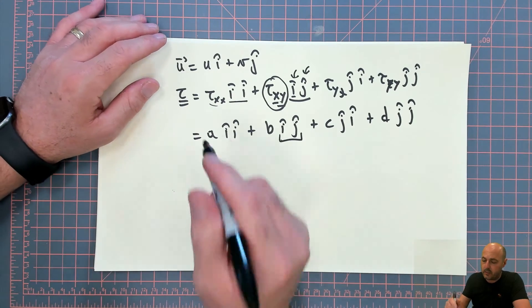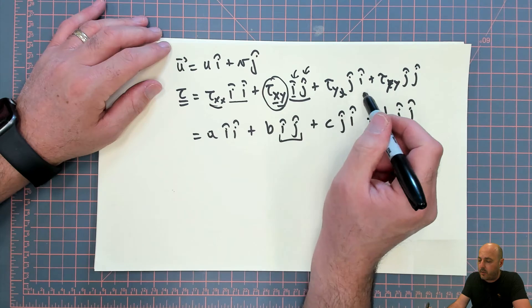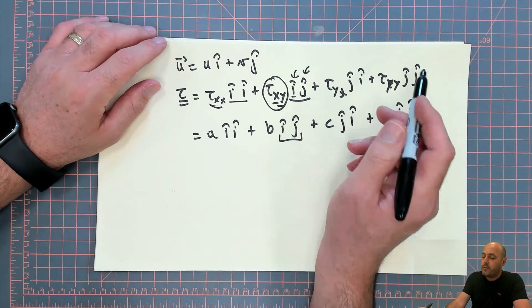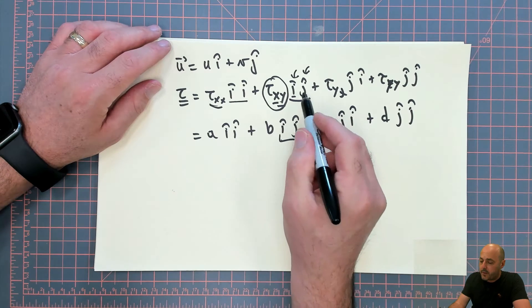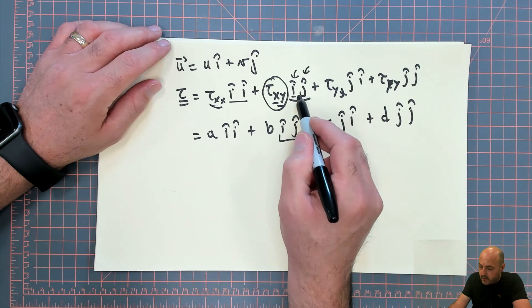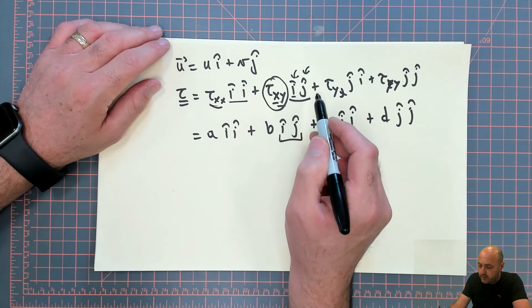So be very careful about that distinction. When we write tau_xx, tau_xy, tau_yx, et cetera, these are descriptive subscripts, but in and of themselves, they do not contain this unit vector directional information.